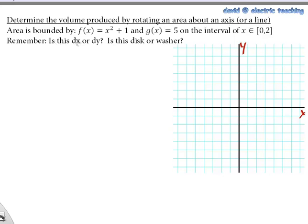Is this a dx or a dy problem? I'll be explaining this. And is this a disk or a washer problem? That's also very important. There's also a method called the shell method, which I'll be covering in another video. So right now, let's take a look at an area bounded by a parabola, f(x) = x² + 1, and the horizontal line y = g(x) or y = 5.